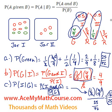So the answer for C is 16 out of 25. That is the probability that jar 1 was selected, given that a green ball was selected overall.